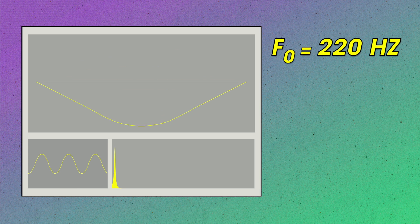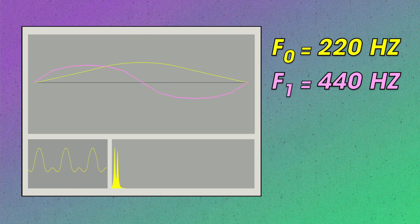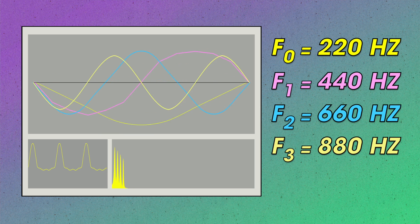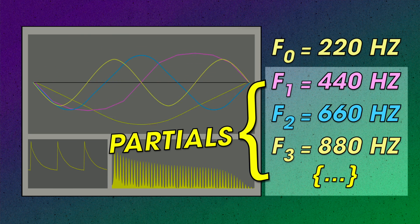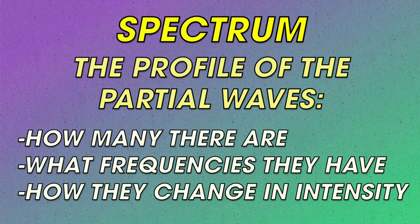What we can do is break down this wave into a bunch of constituent sine tones. We conceptualize this by saying that the string is vibrating at a bunch of frequencies all at the same time, not just the fundamental. So if the fundamental frequency of our string is 220 Hz, then we say that it's also vibrating at 440 Hz, 660 Hz, 880 Hz, and so on. All these other waves are called partials, and every sound in the physical world has them. So the spectrum of a sound is like the profile of these partials — how many there are, what frequencies they have, and how they change in intensity over time.